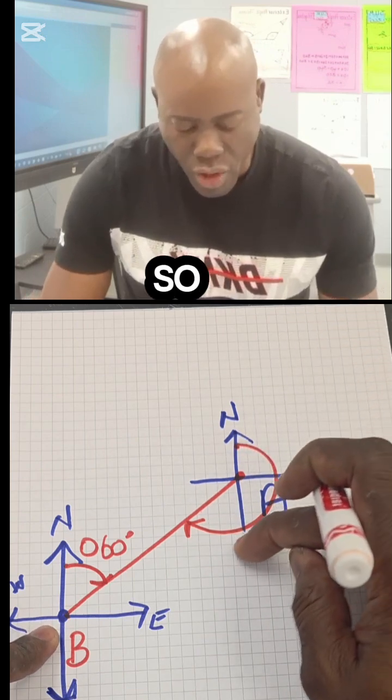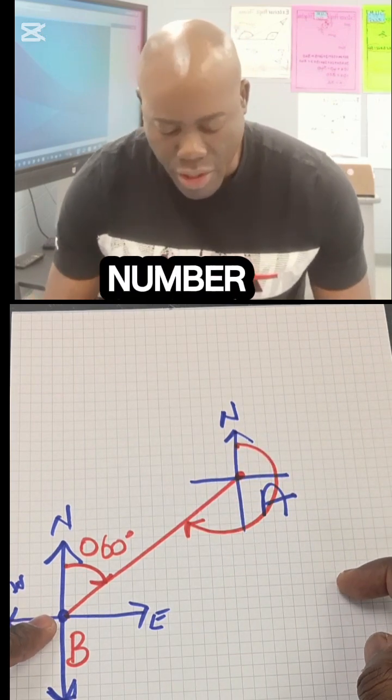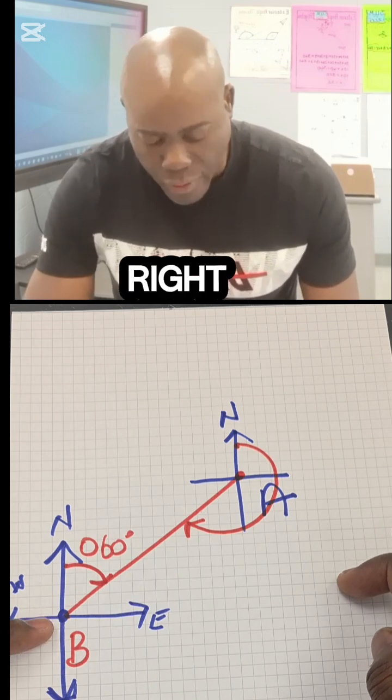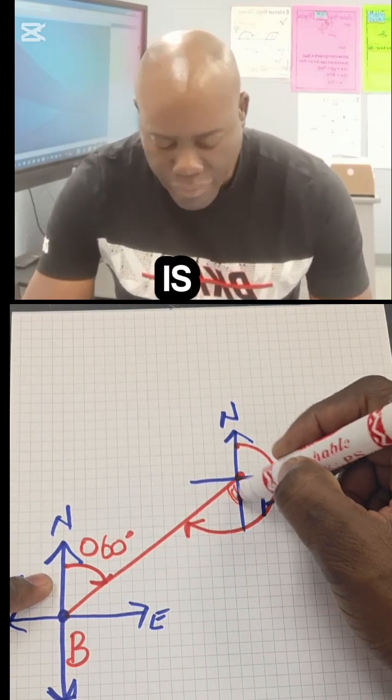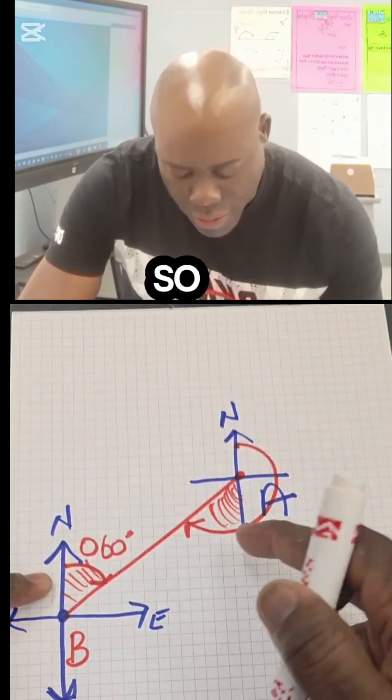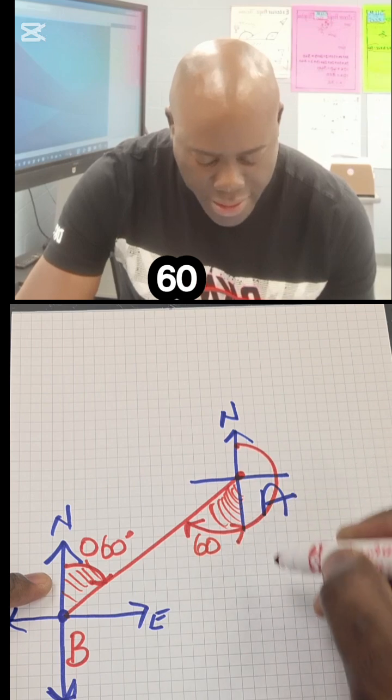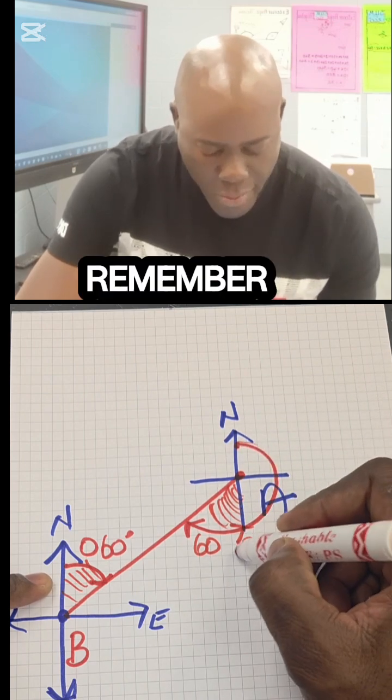So our intention is to find this degree right here in red. There are a number of ways we can find that. What we could do is remember that Z angles are equal, so this angle right here is the same as this. So right here is 60 and it stops right here.